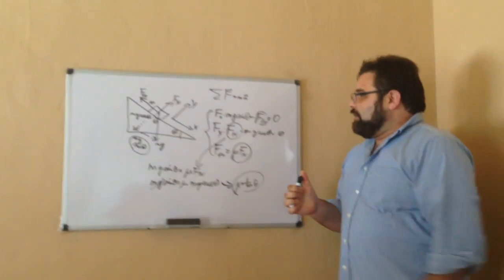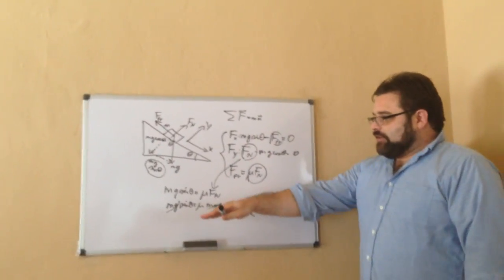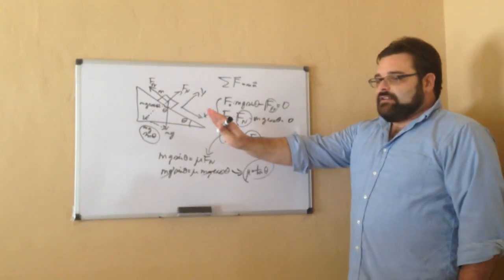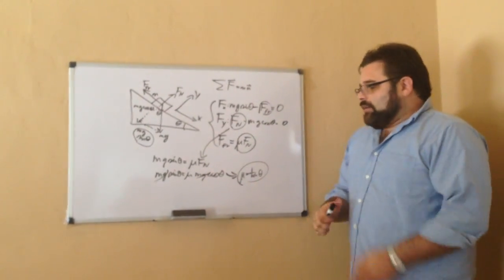This gives us a very simple way to find mu for any pair of objects. You just take your incline plane and keep tilting it, and the angle at which it's just about to start moving, you plug it into this formula, and that will give you mu.